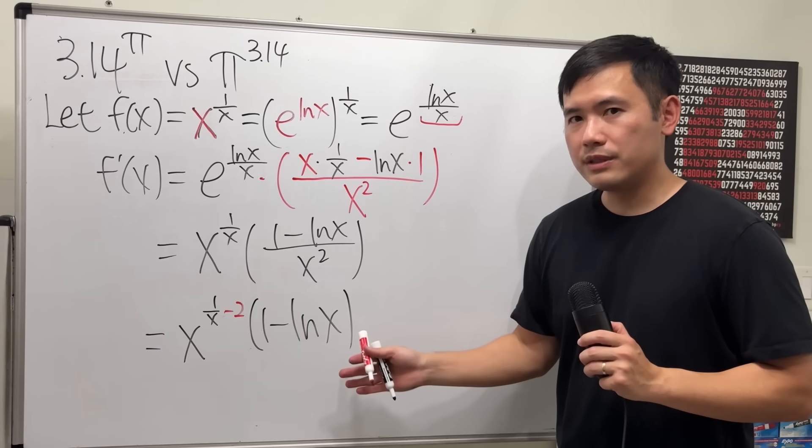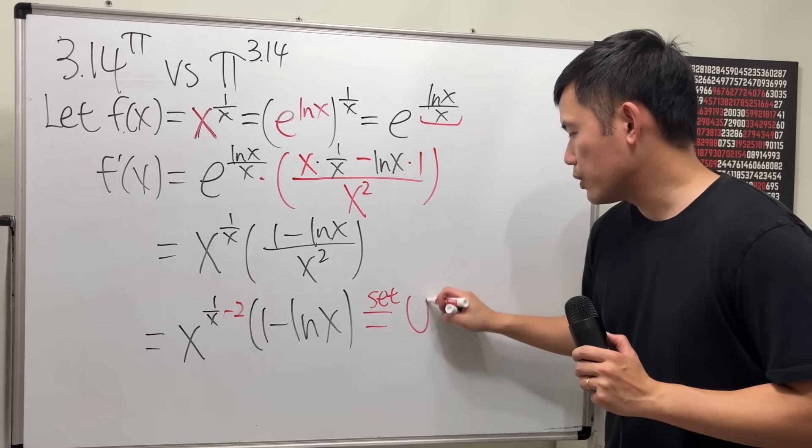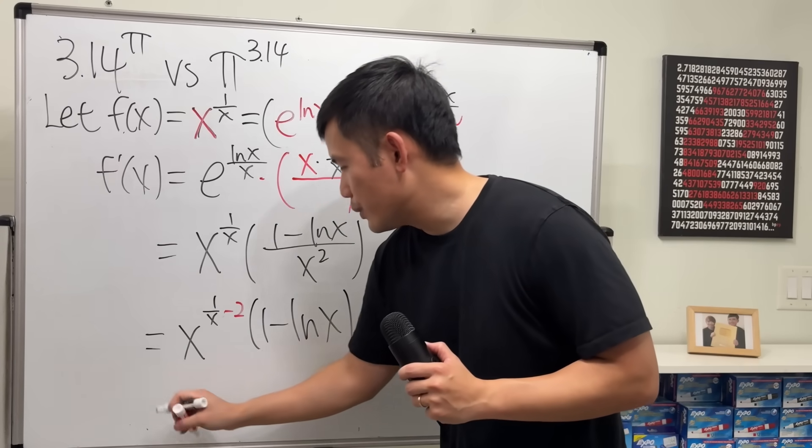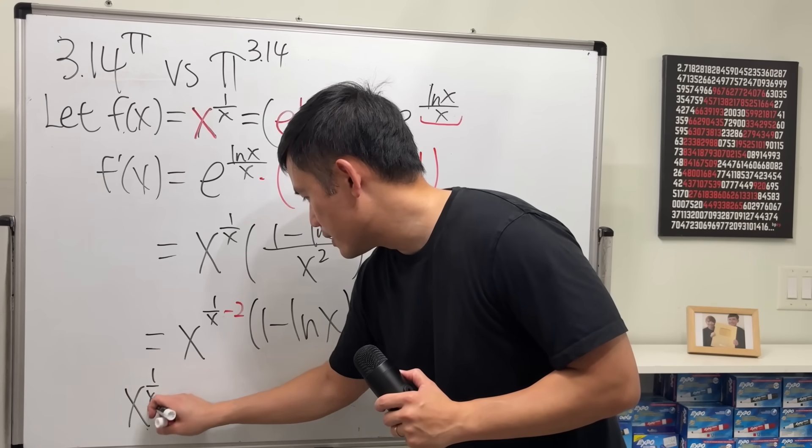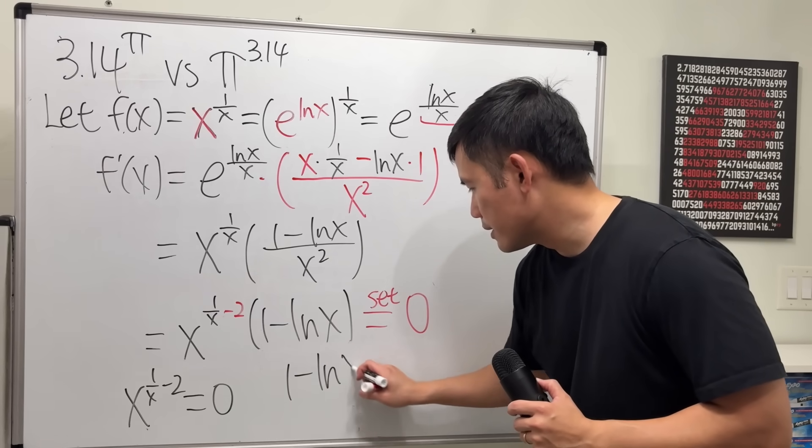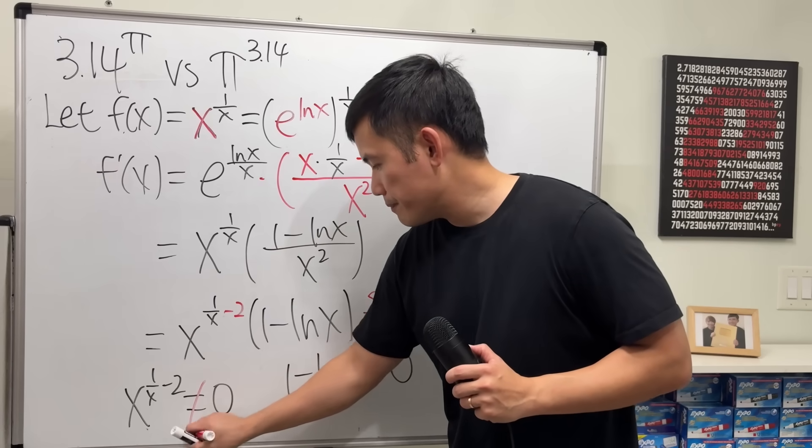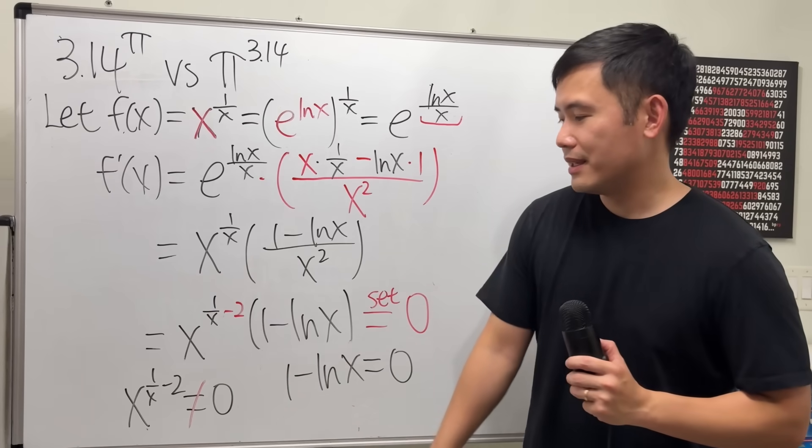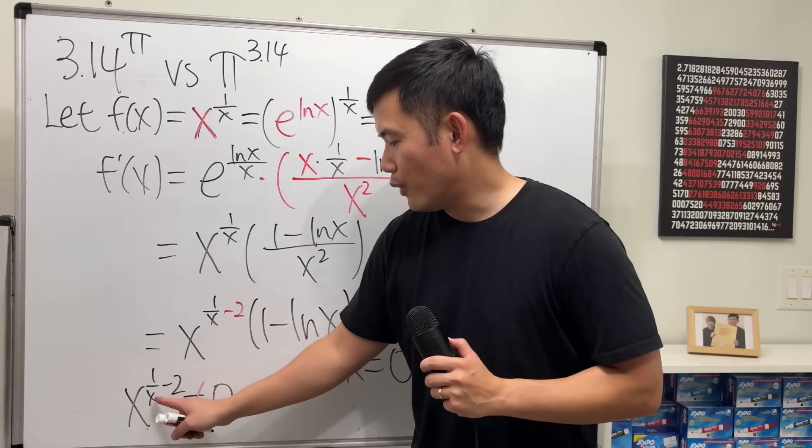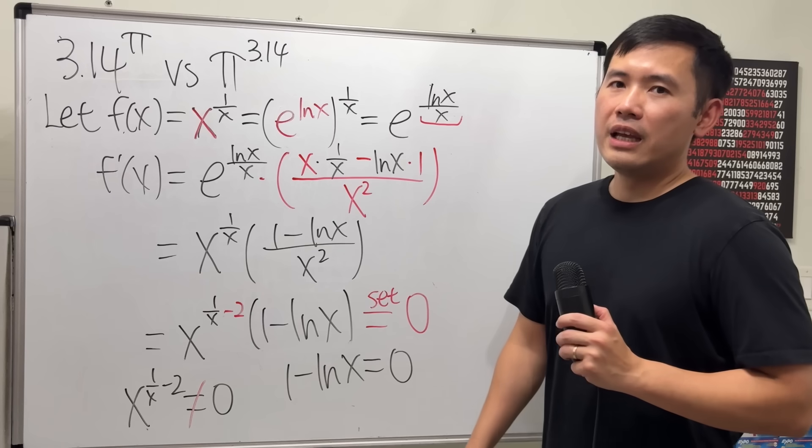Now, when we have the first derivative, we have to set it equal to 0 in order to find the critical numbers. Now, we will have to make this equal to 0, or make this equal to 0. But this equation is impossible. No matter how you try. Maybe you say when x is equal to 0, but that way we get 1 over 0, which is undefined. So, not possible.